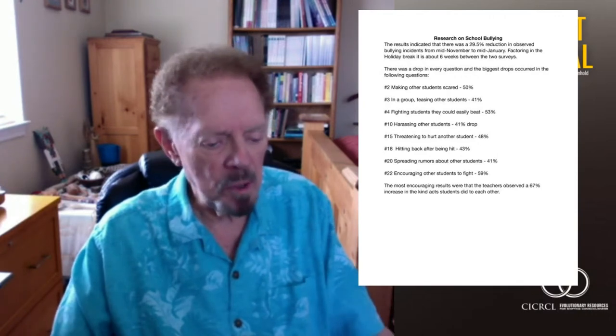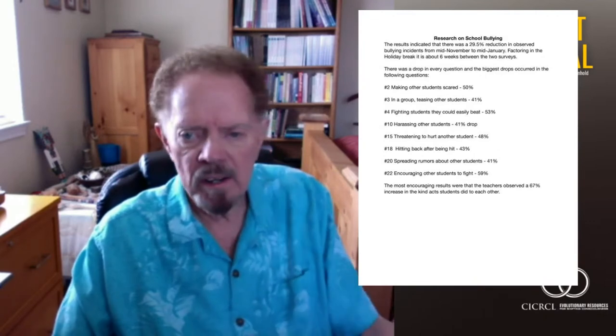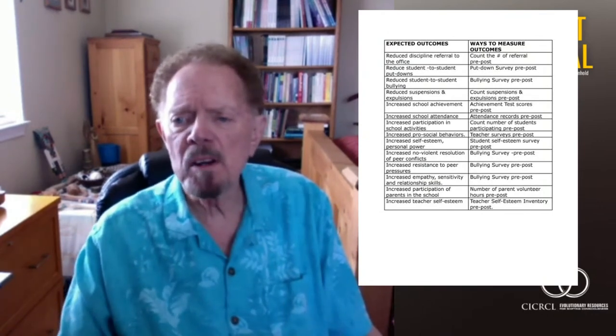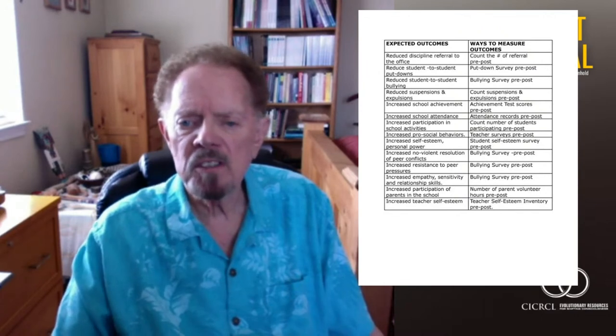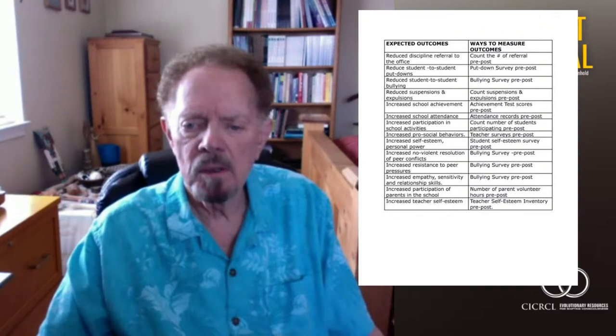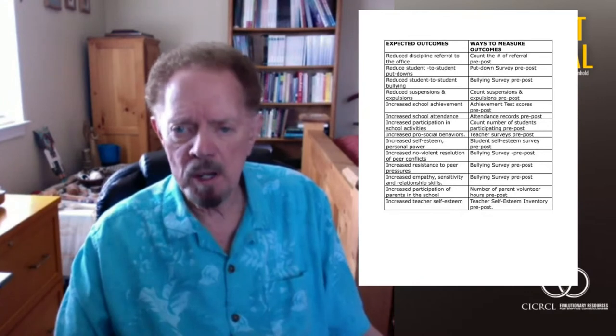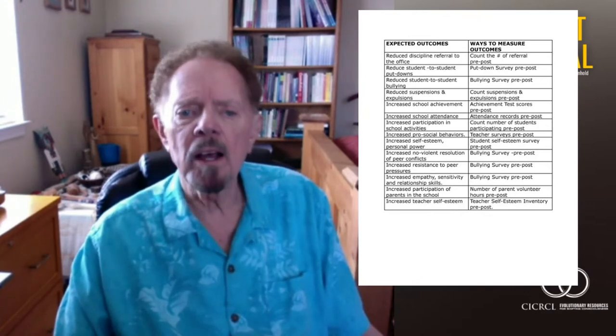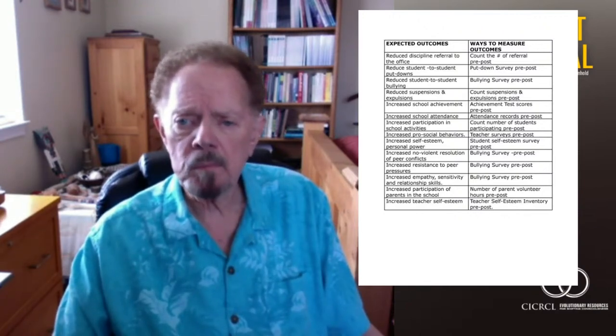So the next one is looking at the expected outcomes that we tried to come up with and measure in a different way, a couple of different ways. There were 14 different variables, outcomes that we thought would be influenced by a kinder and safer school climate.